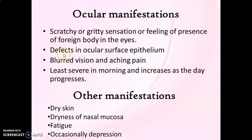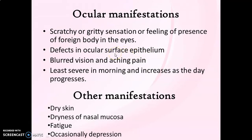Reduced tear secretion or lacrimal secretion causes a scratching or gritty sensation, or the feeling of a foreign body in the eyes. Along with this, there will be defects in the ocular surface epithelium due to inflammation of the ocular mucosa. These defects together are termed as keratoconjunctivitis sicca — that is, xerophthalmia and defects in the ocular surface epithelium together. Because of persistent inflammation, there will be blurred vision and aching pain, and these symptoms are usually least severe in the morning and increase as the day progresses.